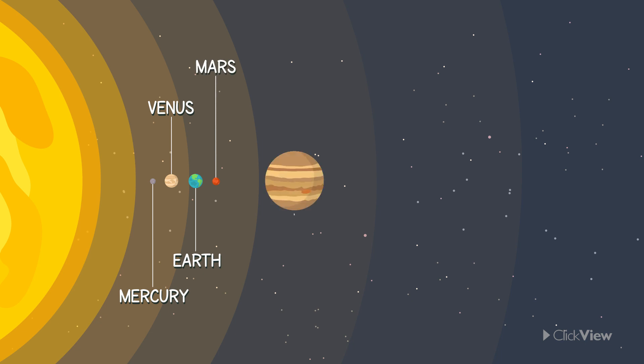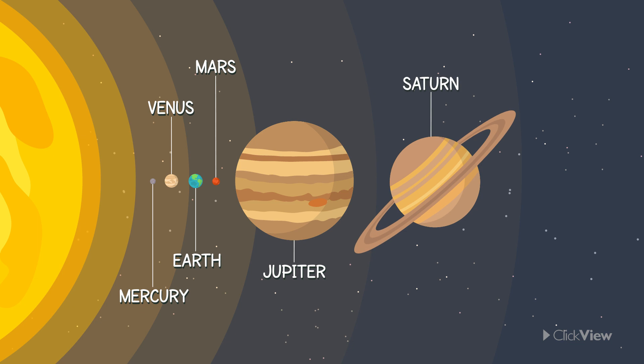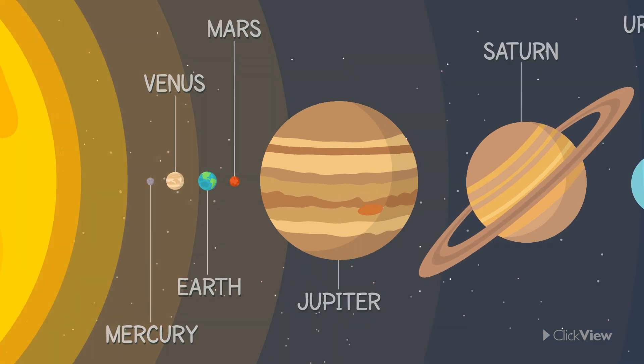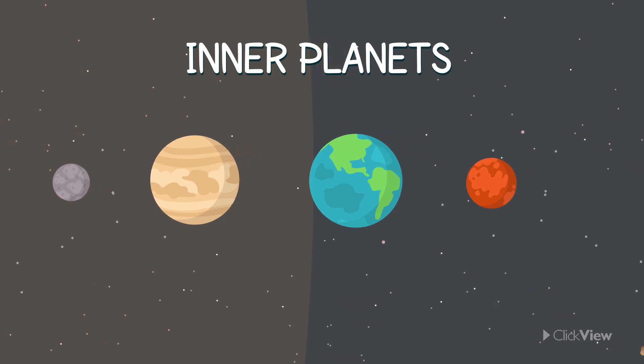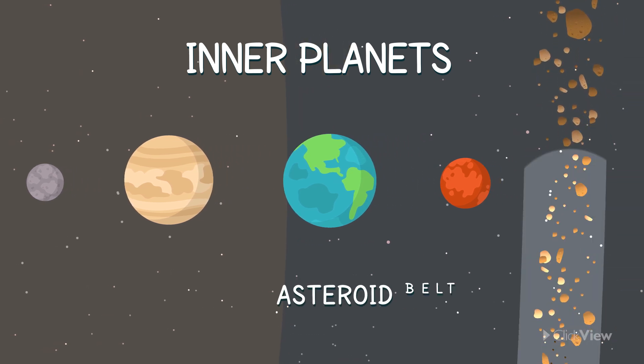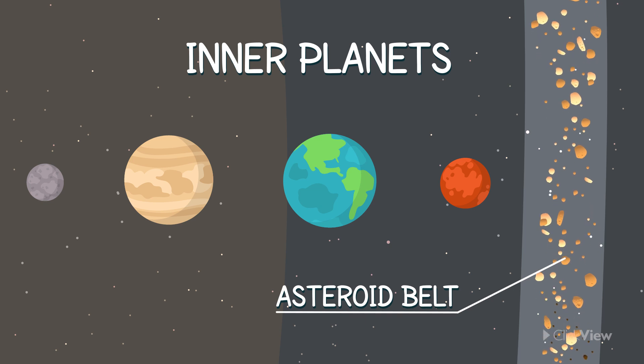Mars, Jupiter, Saturn, Uranus, and Neptune. Let's look at them a little closer. The first four planets that are closest to the Sun are called the inner planets. They are called so because they are present inside a ring of rocks called the asteroid belt.